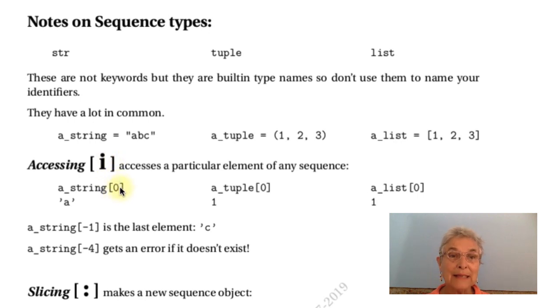What's nice about accessing in Python is that you can access from the end. If I say minus one, I get the last element. So the last element of string is a C. If I try to access an element that doesn't exist, like minus four string, I get an index error. This integer in here is the index.